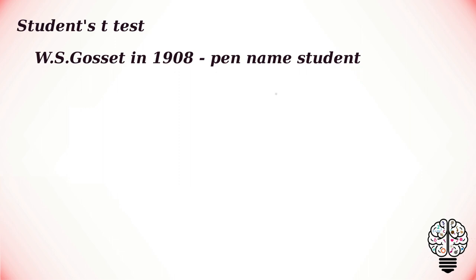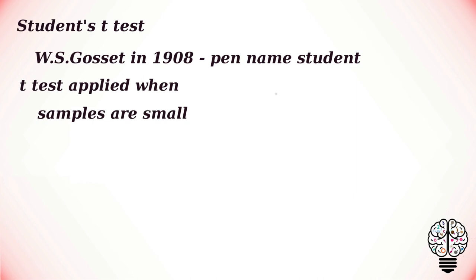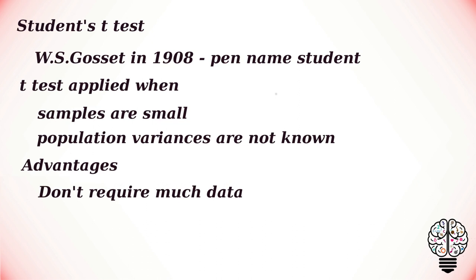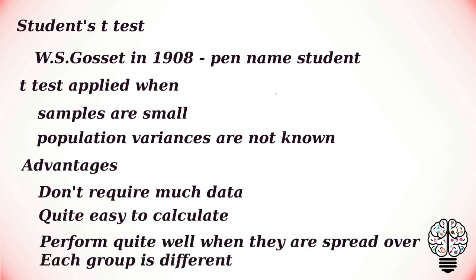The Student's t-test was developed by Professor W.S. Gosset in 1908, who published his statistical papers under the pen name 'Student.' The Student's t-test is applied when samples are small and when population variances are not known. Some advantages of parametric tests are that they don't require much data, are quite easy to calculate, and provide all the necessary information.